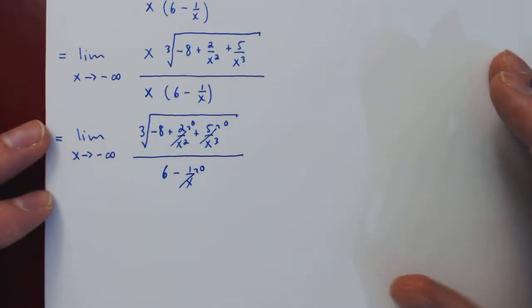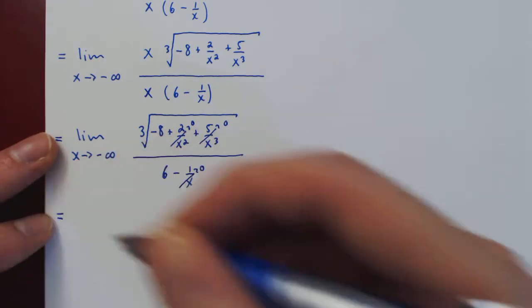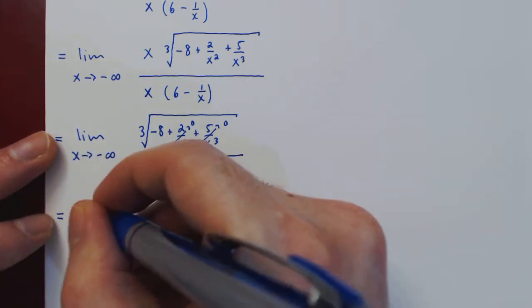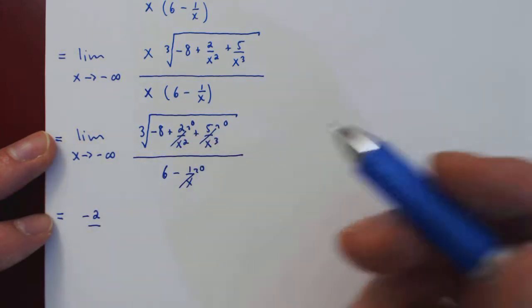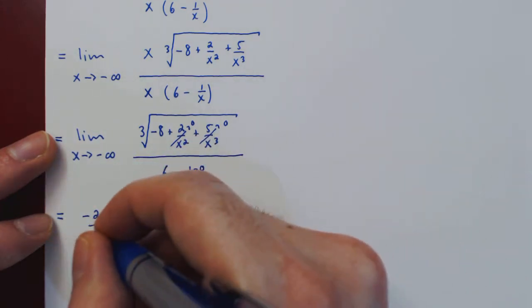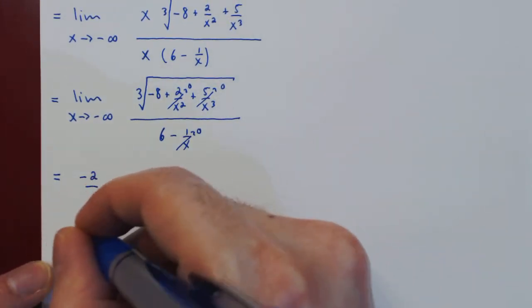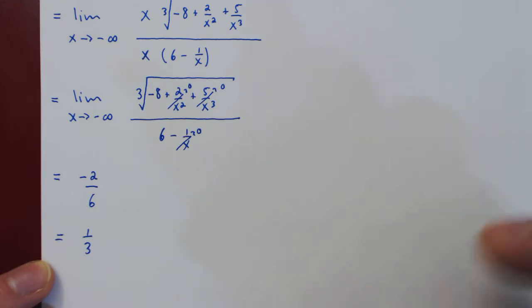So what are we left with? Well, on the numerator, we are left with the cube root of negative 8, which is negative 2. And on the denominator, we're left with 6. So the answer is negative 2 over 6, which of course simplifies to negative 1/3. And that's it.